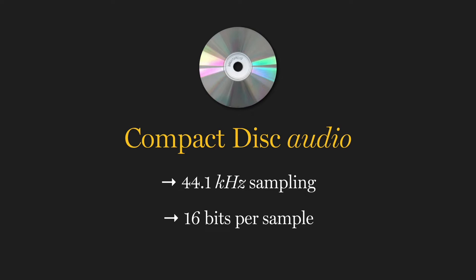For example, the original compact disk specification stores audio signal amplitudes as 16-bit values, sampled at 44,100 times per second. This is still the audio format used for much of our media today.